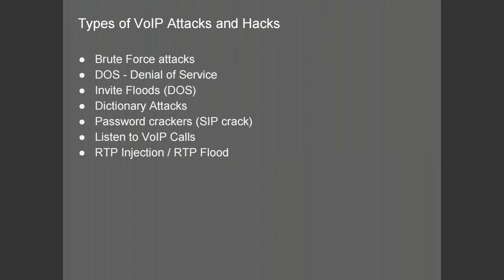Someone will try to guess their way into the network by trying to figure out the extension numbering, usernames, and passwords. Denial of service will basically prevent the rightful owner from using their resources. This may be either an invite flood where you send bogus requests to the PBX, or even just dialing the PBX and filling up all simultaneous calls intentionally while preventing the rightful people from using their PBX.